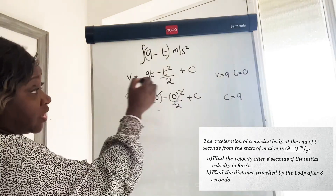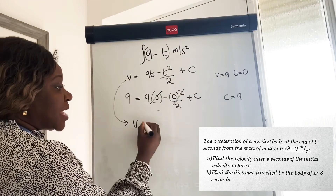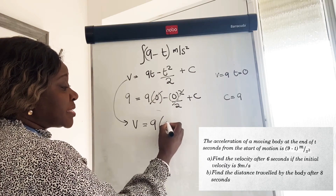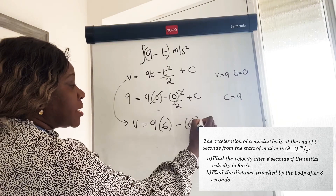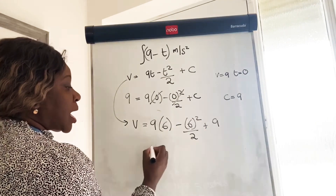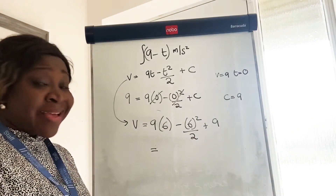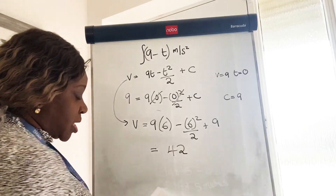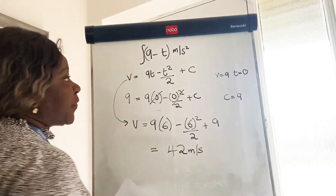To find the velocity, v equals 9t minus t squared over two plus C, where C equals 9. We said to find it after six seconds, so: v equals 9 times 6 minus 6 squared over 2 plus 9. Putting that into your calculator should give you 42 meters per second for the velocity.